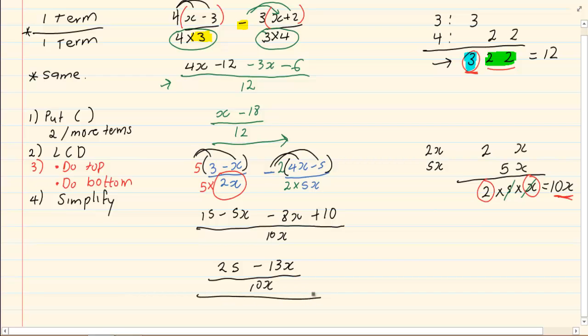Now, you have completely simplified. Remember, you cannot cancel the x with the x because there are 2 terms on top and 1 term at the bottom. Thank you for watching.